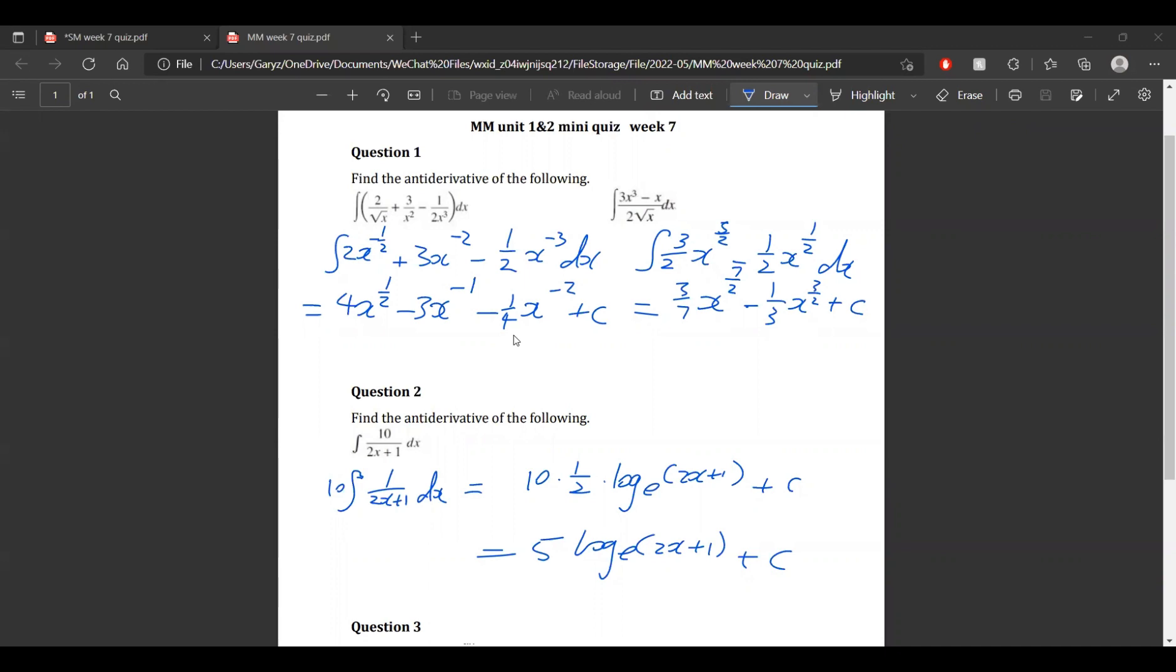So for the first two questions I think it's best to write every term in their power form. For example, 2 on root x is the same as 2 times x to the power of negative 1 half.